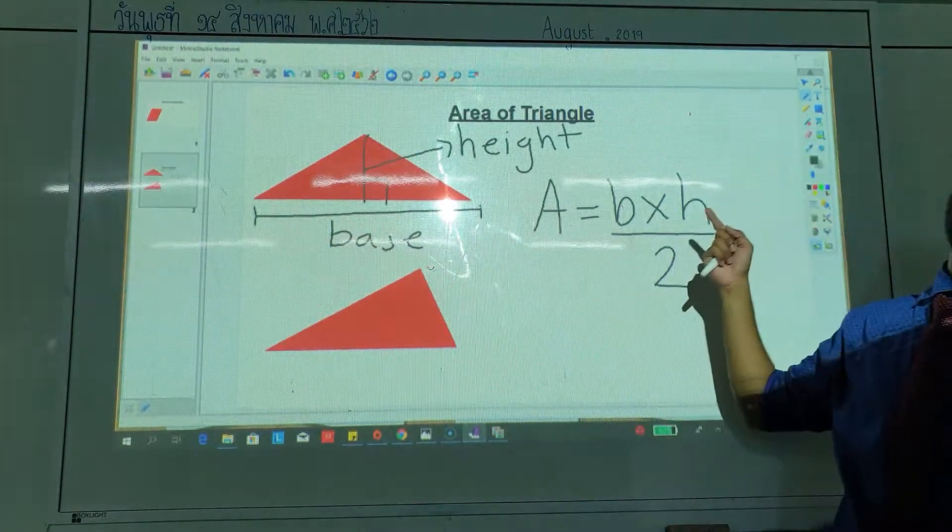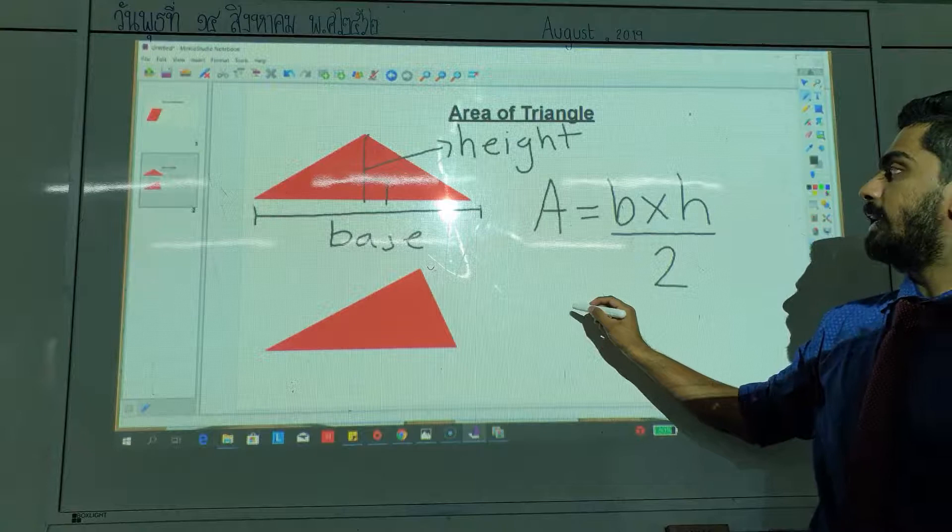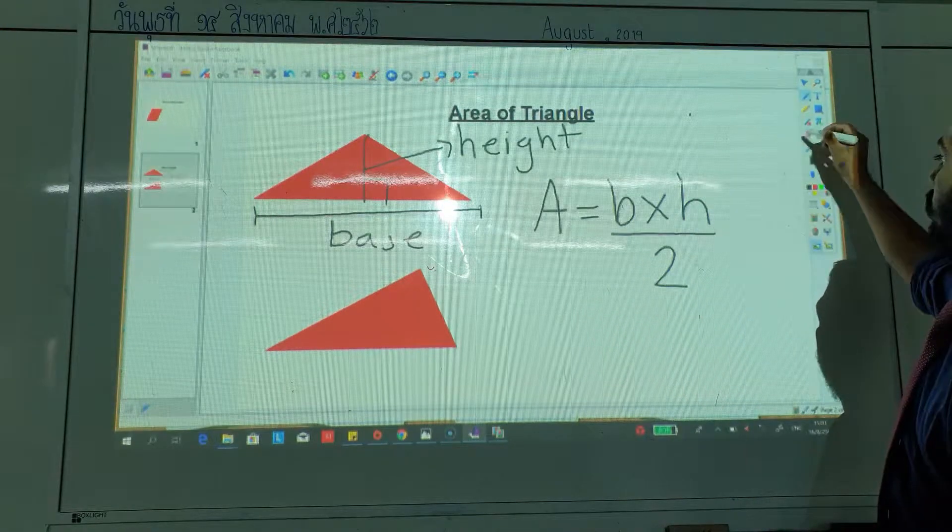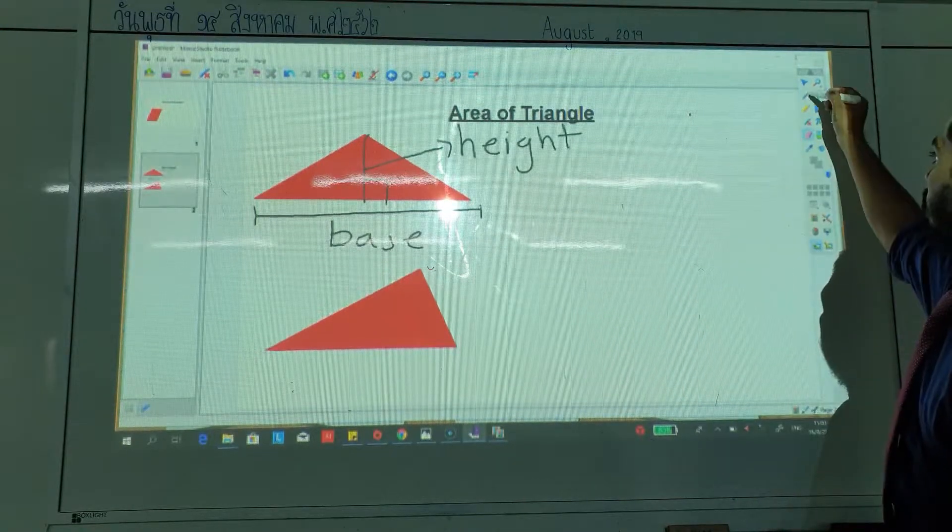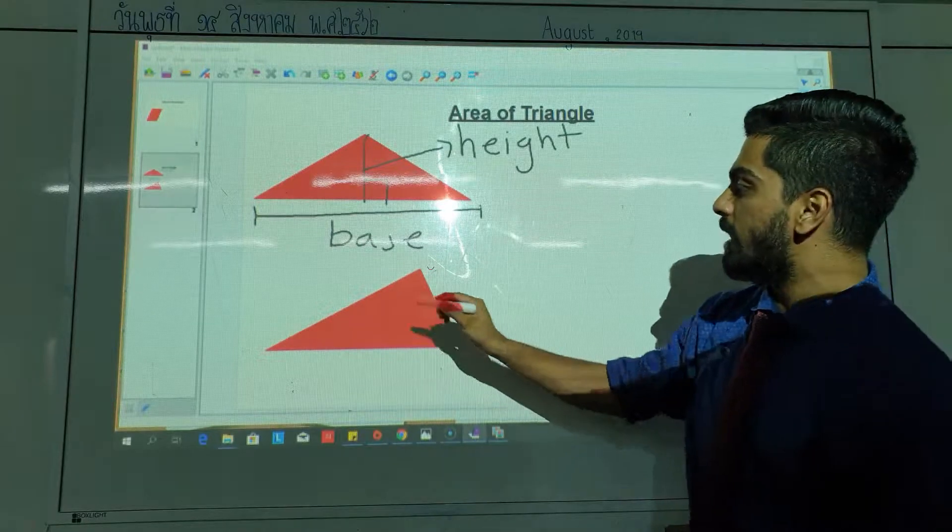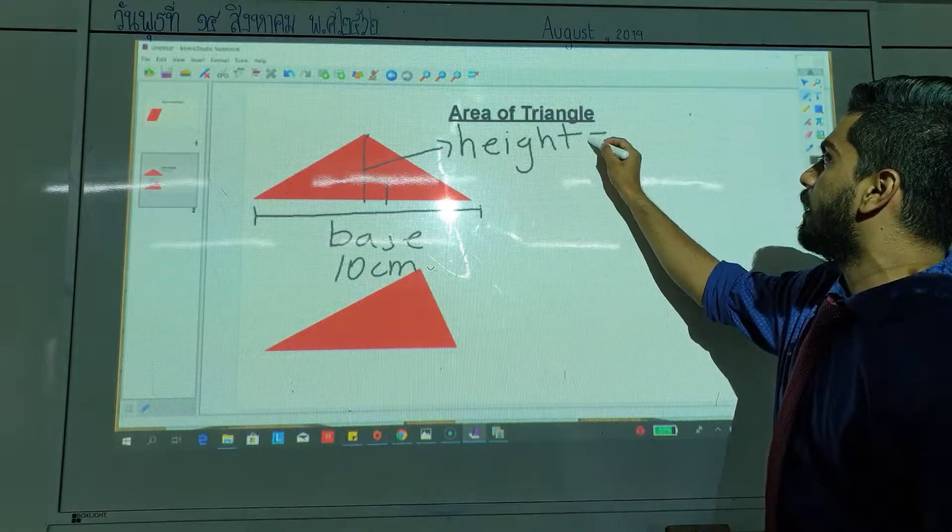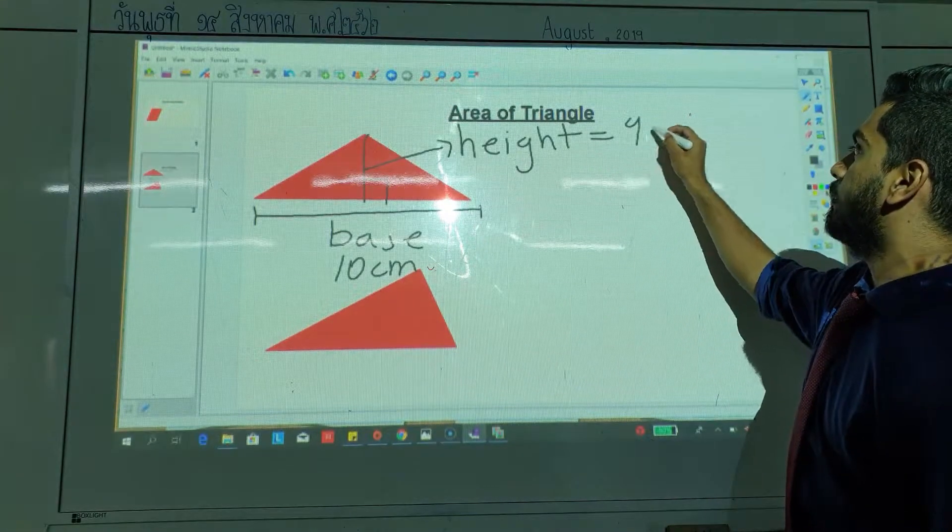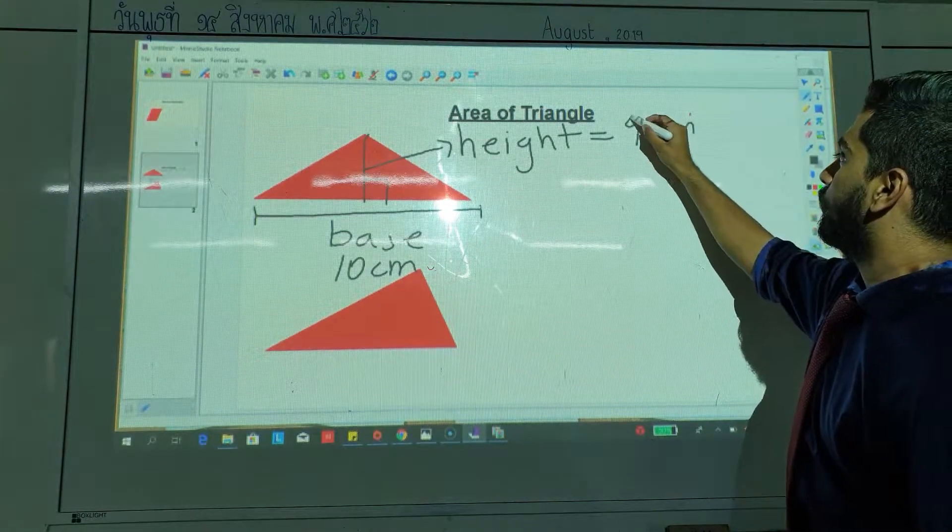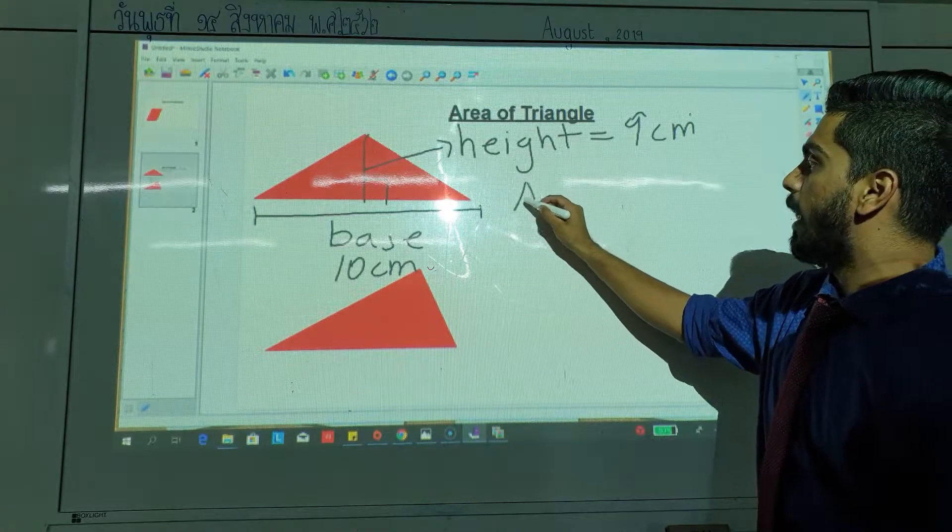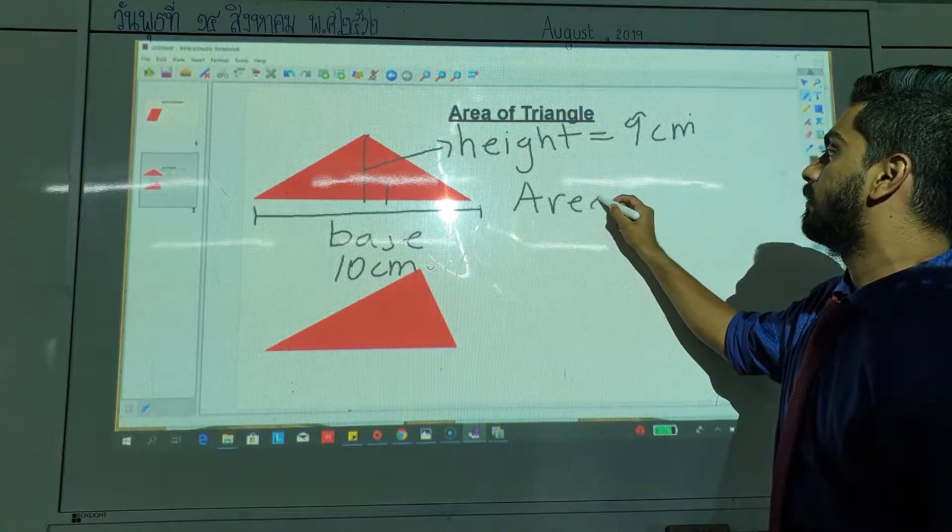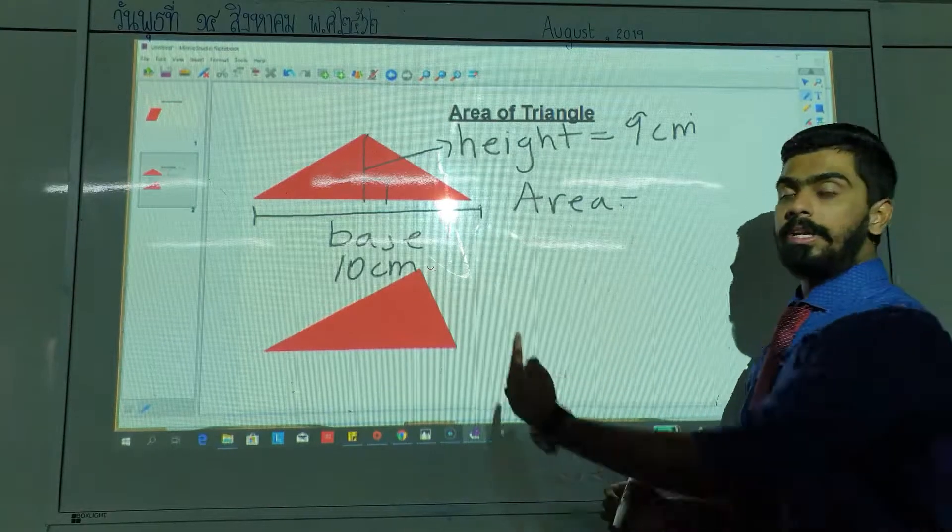Now, let me give you an example. Let's say the base is 10 cm and the height is 9 cm. Now, in order to find the area, what we do is we take the base.